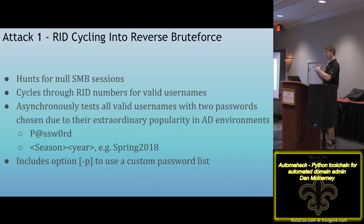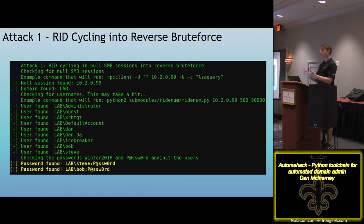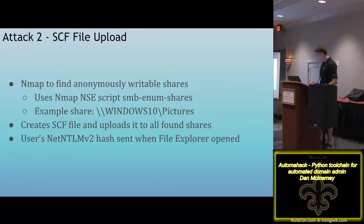It asynchronously tests using about 10 different jobs at once, so it's pretty fast. It does this attack first because it's generally pretty fast. This is what it looks like in use — you can see it says we're doing attack one, checking for null sessions. It found a null session on 10.2.0.99, which gives it the domain name and usernames, and it brute forces them pretty quickly.